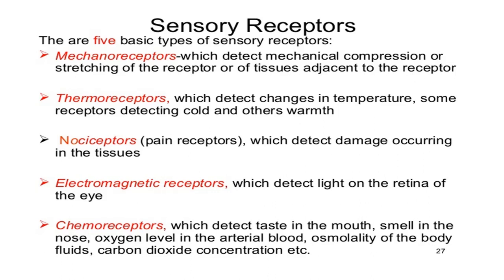This is all about the basic structure of neurons, the difference between myelinated and unmyelinated neurons, the structure of axons and dendrites, the different types of nerves including sensory and motor neurons, and the five types of sensory receptors present in the body: mechanoreceptors, thermoreceptors, nociceptors, electromagnetic receptors, and chemoreceptors. This concludes today's lecture. If you have any queries, please contact at the provided number. Thank you.